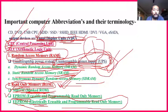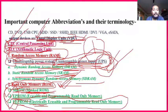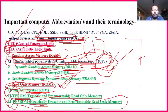So from this slide, you need to know three types under ROM — MROM, EPROM, EEPROM — plus UPS (fourth), CPU, ALU (five, six), and VDU (seven). Total seven abbreviations to know from this slide. Please make a note: these seven full forms are important.